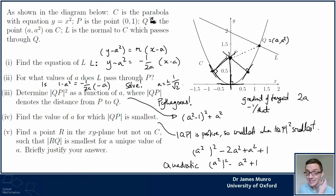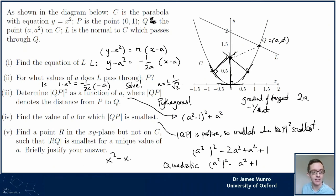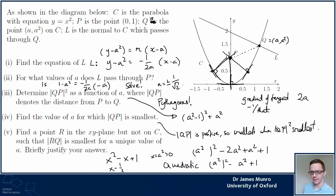This quadratic in a² - I can try to make it nice and small. I'm thinking of it as x² − x + 1 where x = a², a positive number. I want to minimize this quadratic, so I'll complete the square: it's (x − 1/2)² + 3/4, which is minimized when x = 1/2. So I want a² = 1/2, meaning a = 1/√2.